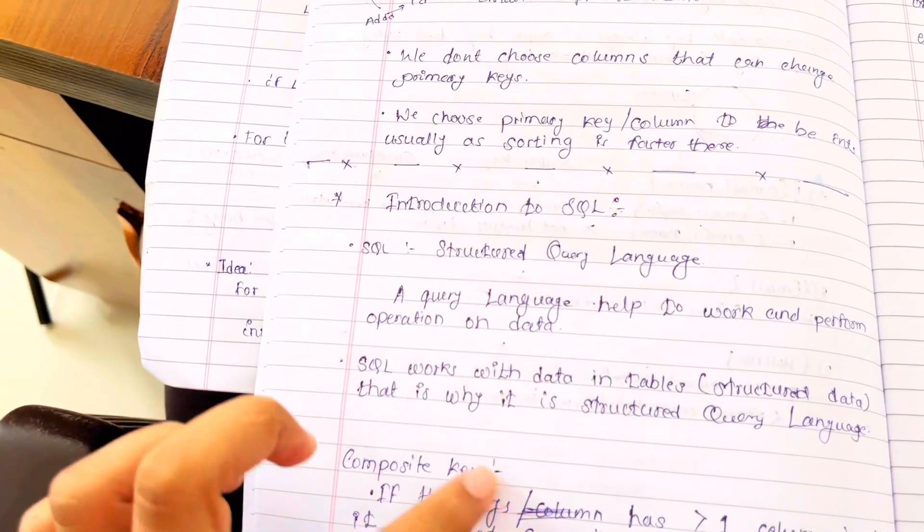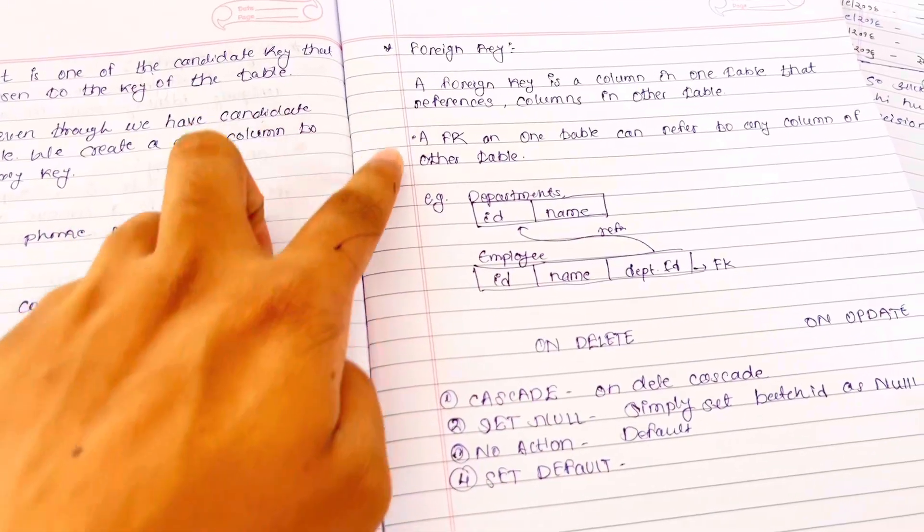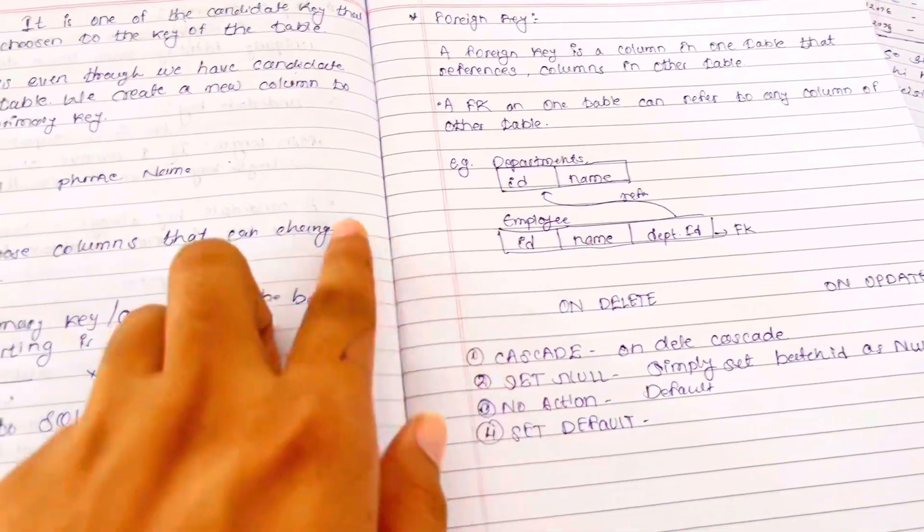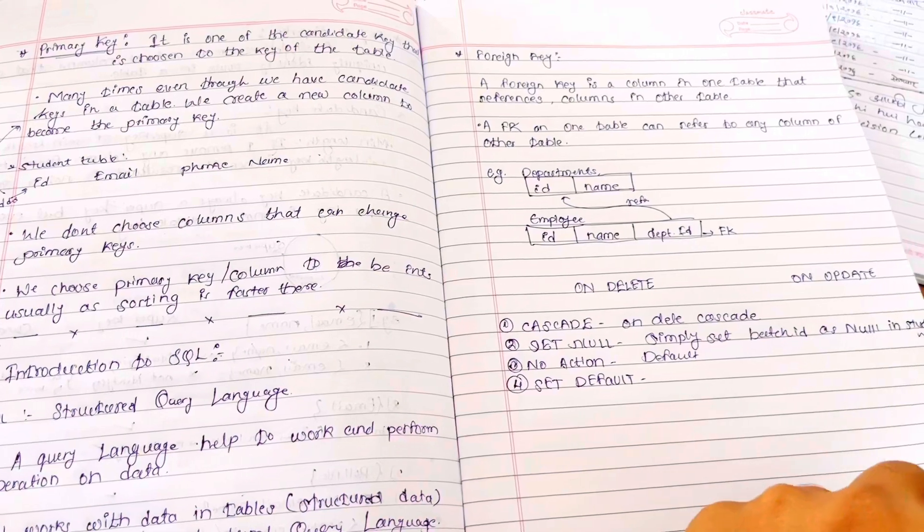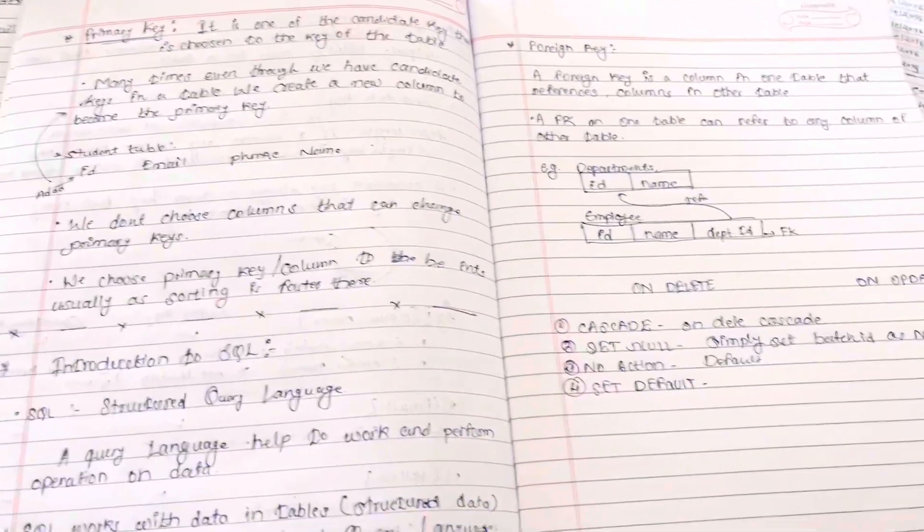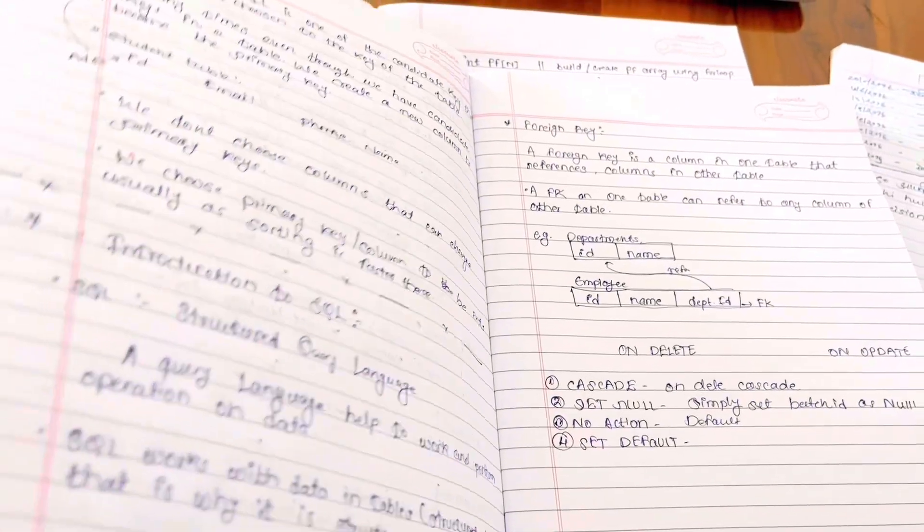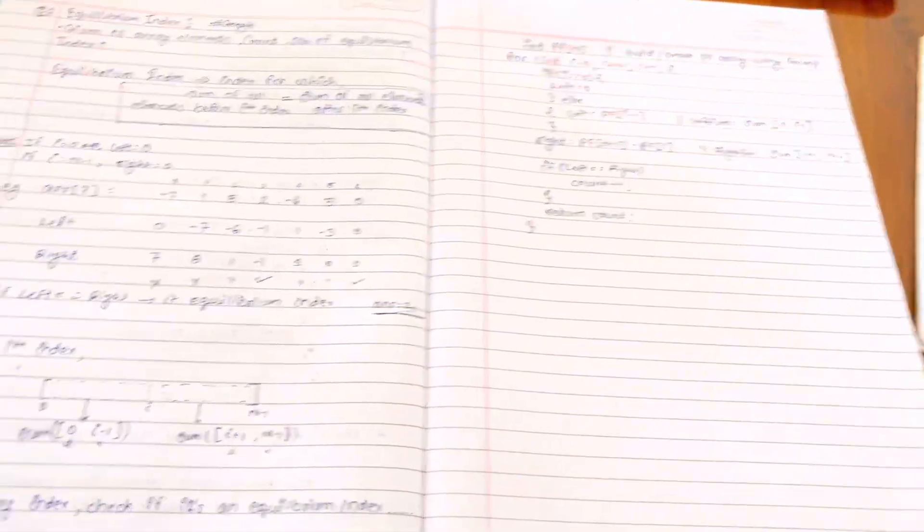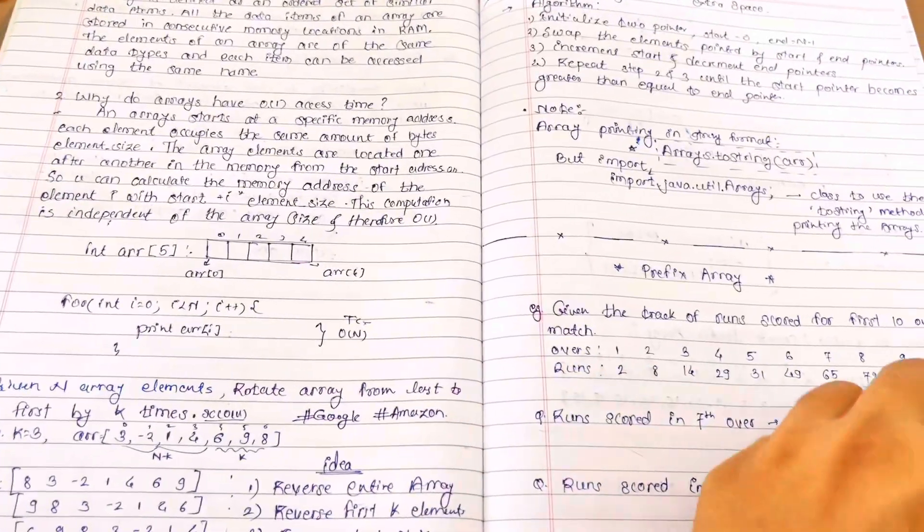For composite keys, we have mentioned the main concepts. Also covered are foreign keys and cascade, which is an important term.